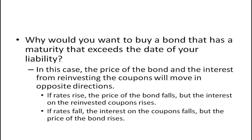Why would you expect this to work? You're buying a bond that has a maturity exceeding the date of your liability. It turns out that the price of the bond and the interest from reinvesting the coupons move in opposite directions. If rates rise, the price of the bond falls but the interest on reinvested coupons rises. If interest rates fall, the interest on the coupons falls but the price of the bond rises. When we try to hedge something and reduce risk, we want things that move in opposite directions — and these in fact do.